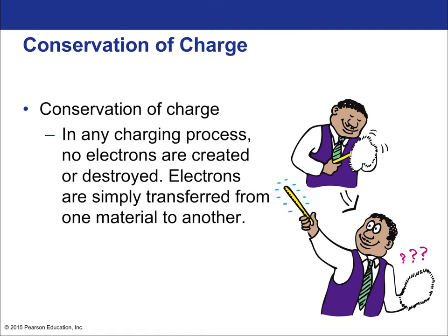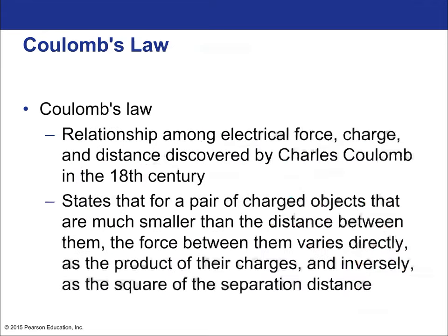What about conservation of charge? Charge cannot be created or destroyed—it can only be moved from one place to another. Electrons are simply transferred from one material to another. Even in high-energy phenomena like fusion or fission, charge is conserved, often through the creation of additional particles like a positron—a positively charged low-mass particle with the mass of an electron. Conservation of charge always holds.